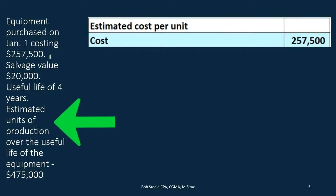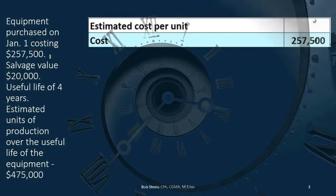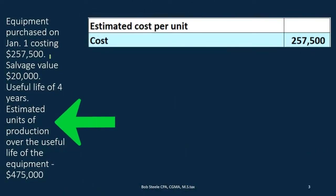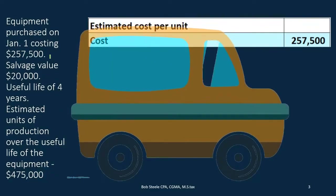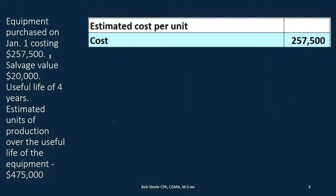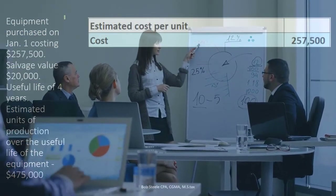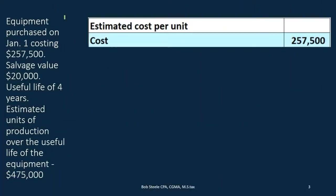The units of production method asks: why use time as the measure at all? Instead, we should allocate based on actual usage — a better driver of how much cost has been consumed. For example, with a car, instead of depreciating based on how old it is, we depreciate based on how many miles it has been driven.